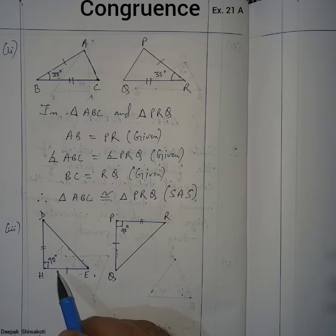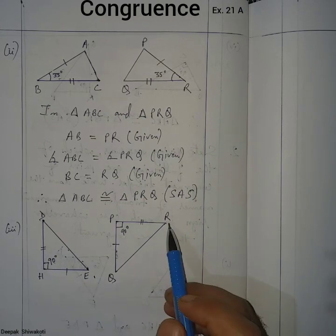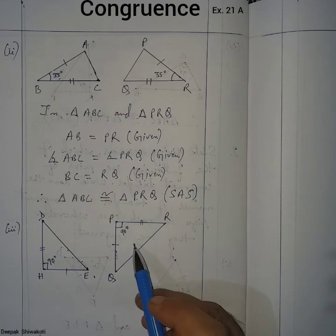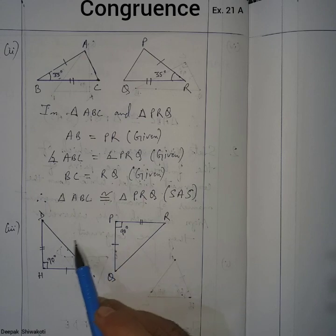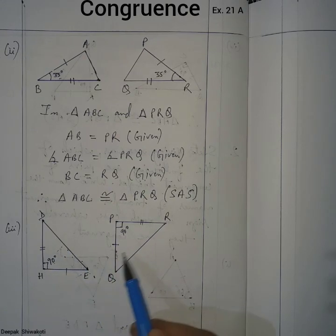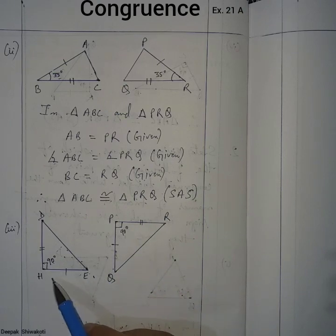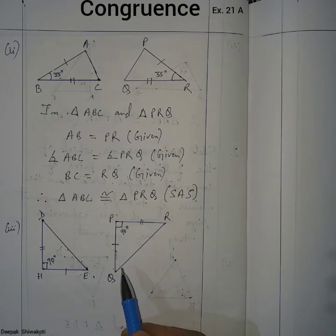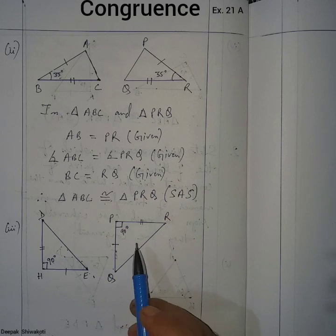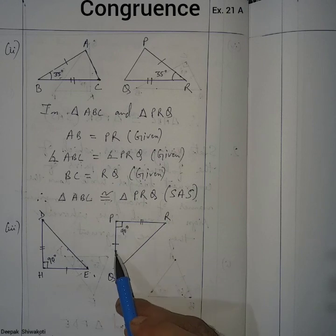The triangle name is DHE and the other is RPQ. Side DH equals RP, angle DHE equals angle RPQ, and side HE equals side PQ. So these two triangles are congruent by Side-Angle-Side, where the angle is the included angle between the two sides.